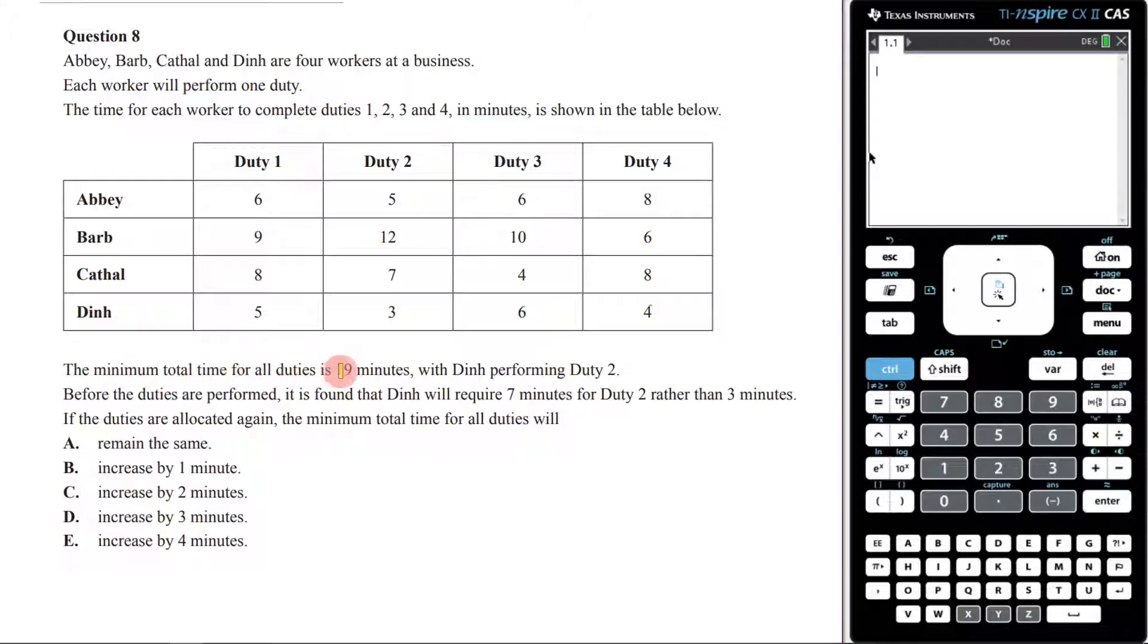The minimum total time for all activities is 19 minutes with Dean performing duty 2. Before the duties are performed, it's found that Dean will require 7 minutes for duty 2 rather than 3 minutes. If the duties are allocated again, the minimum total time for all duties will be which of these?